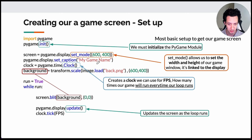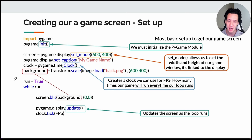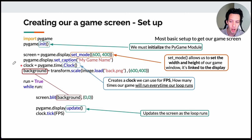Set mode takes one argument — a width and height tuple — that will be the size of your game screen. Every game needs a name; use pygame.display.set_caption() and give it a string for what you want your game to be called. Players will be able to see this, so give it a good name.